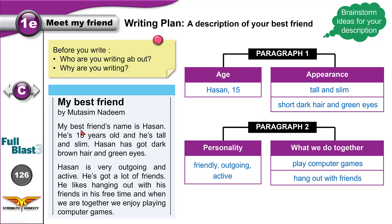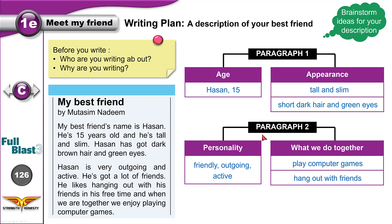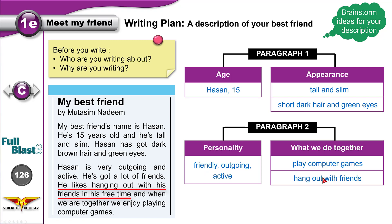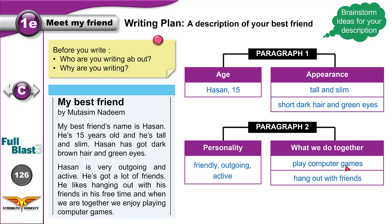Paragraph one: my best friend's name is Hassan. He is 15 years old and he is tall and slim. Hassan has got dark brown hair and green eyes. Paragraph two: Hassan is very outgoing and active. He's got a lot of friends. He likes hanging out with his friends in his free time. And when we are together, we enjoy playing computer games.